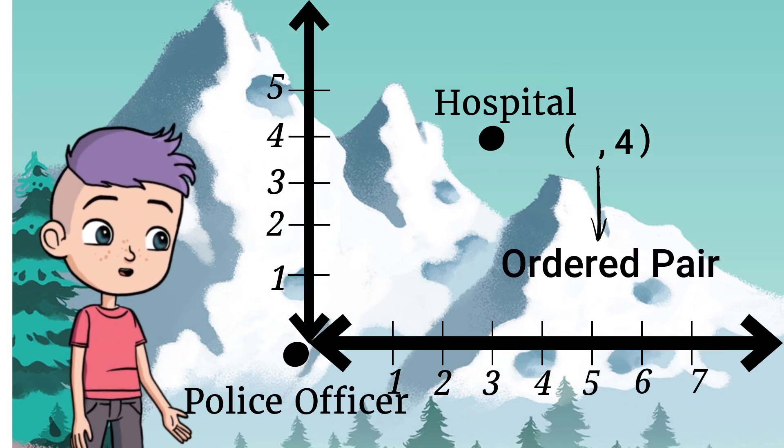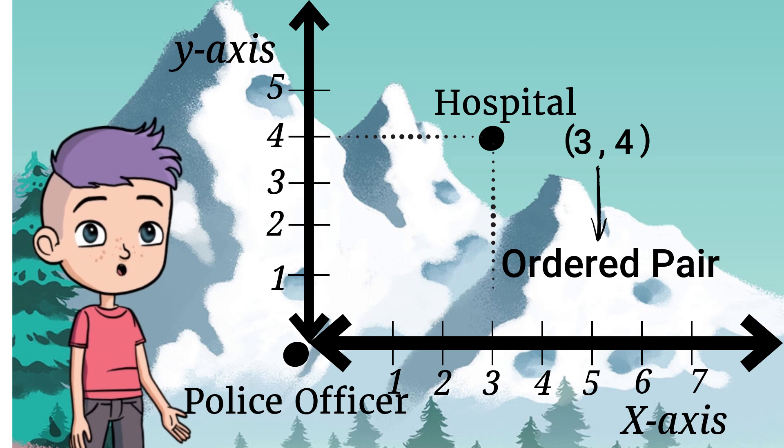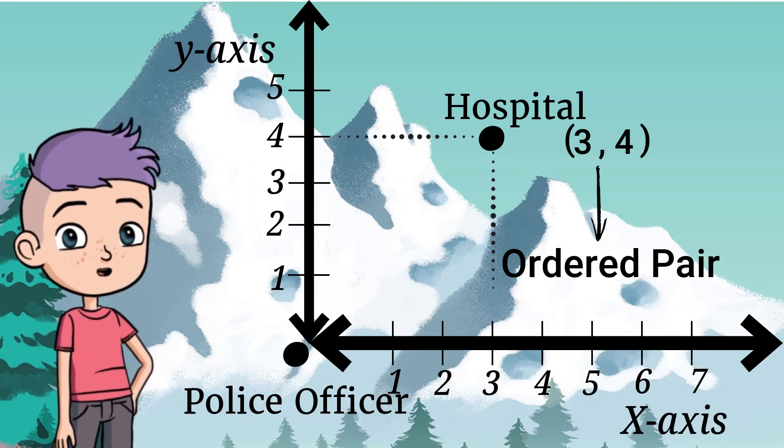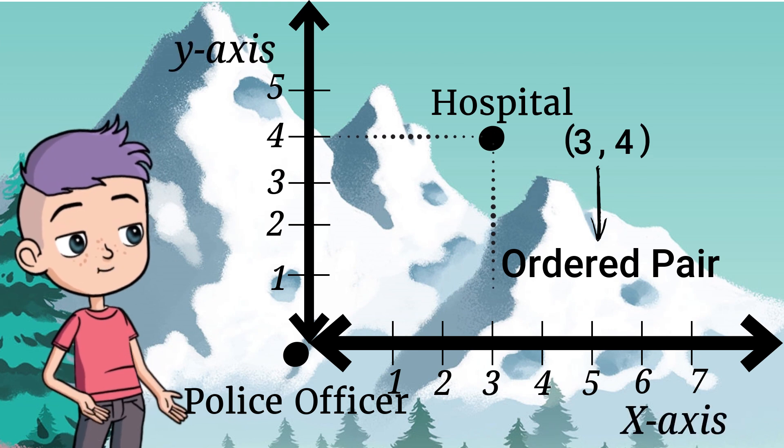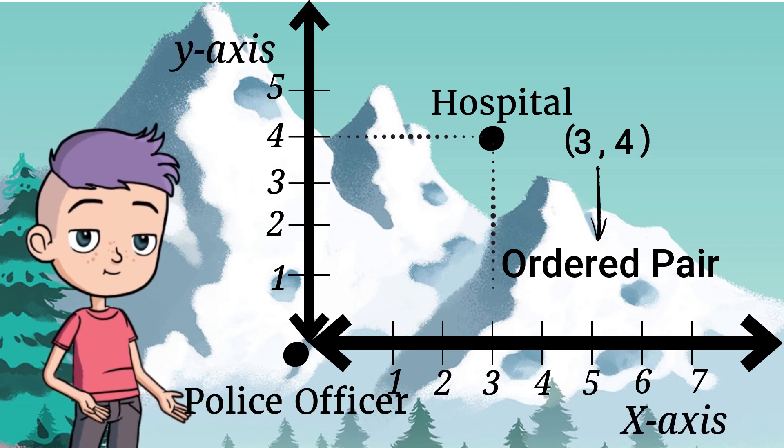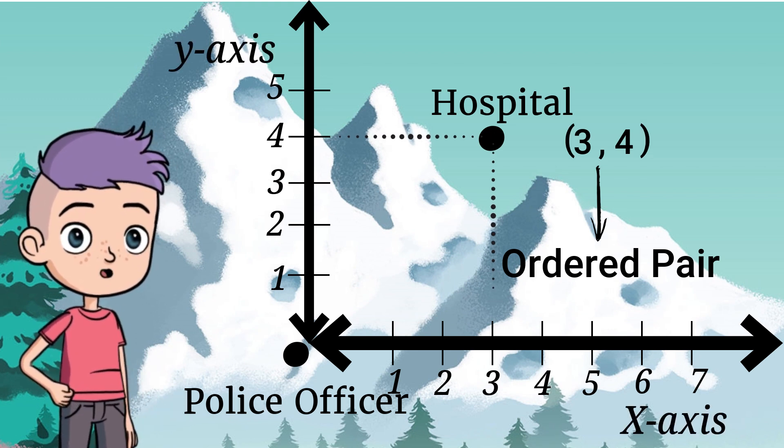Your x-axis is always written first followed by your y-axis. Try not to forget your comma and your brackets or parentheses. Then, bada boom bada bing! You have your ordered pair.